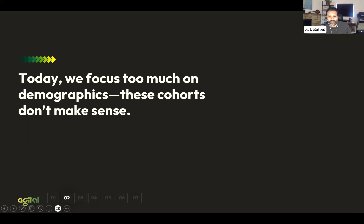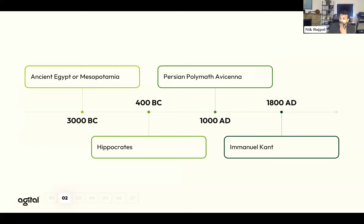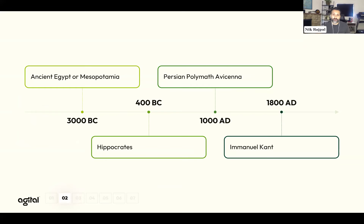Asking questions that are a little deeper is not new to humans. Hippocrates was the first to codify this into a science called humoral sciences — the study of humans — and he said there are four different types of humans. But Hippocrates actually borrowed from the ancient Egyptians, who were the first to observe that humans seem to fall into four different camps. These temperaments were further discussed by the polymath, then Kant, and eventually evolved into what we now call modalities.